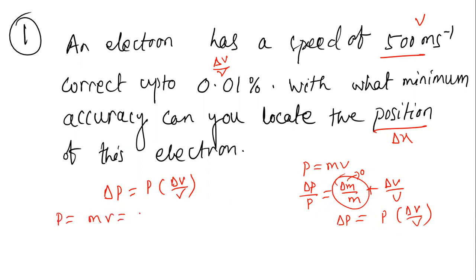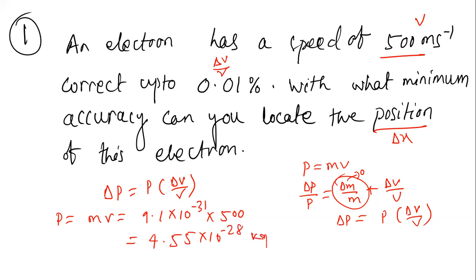The mass of the electron is 9.1 × 10⁻³¹ kg, multiplied by the speed of 500 m/s, giving p = 4.55 × 10⁻²⁸ kg·m/s. Now we have the value of p.